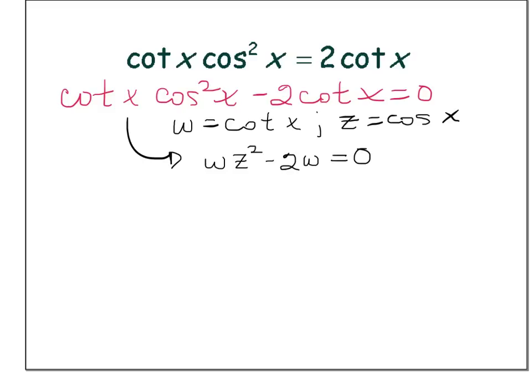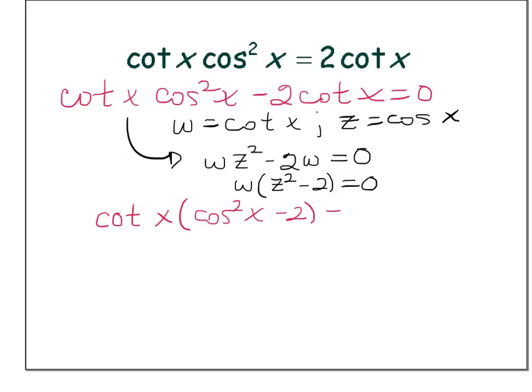Now think to yourself: how would I solve this equation? What I would do is factor out a common factor of w, giving w times (z squared minus two) equals zero. That's exactly what's going to happen here. We're just going to go back and make substitutions for our original trig functions. By factoring out cotangent, I have cotangent x times (cosine squared x minus two) equals zero.